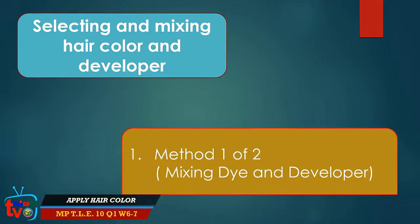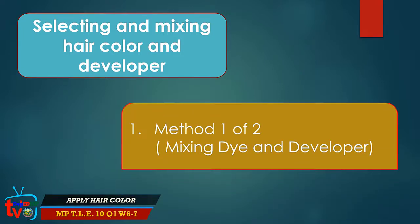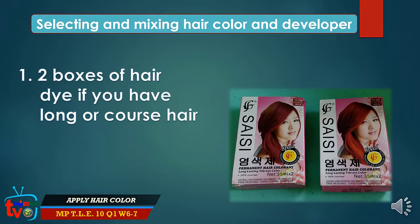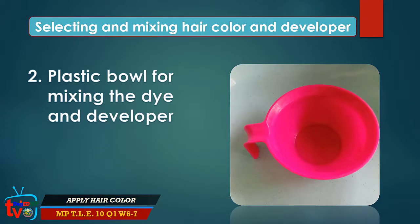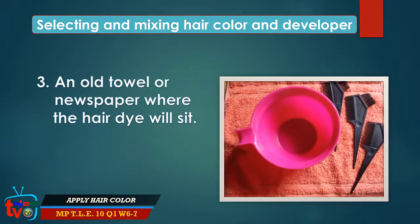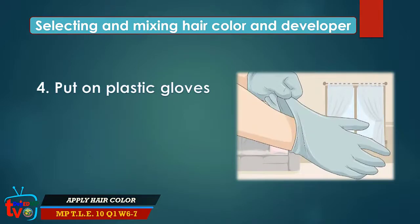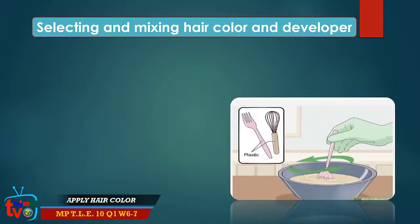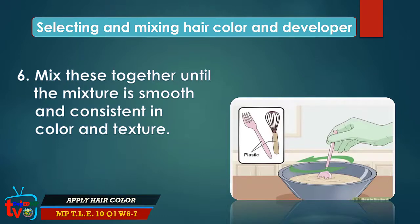Selecting and mixing hair color and developer. Method 1 of 2 — Mixing dye and developer. Step 1: Get 2 boxes of hair dye if you have long or coarse hair. Step 2: Use a plastic bowl for mixing dye and developer. Step 3: Place an old towel or newspaper where the hair dye will sit. Step 4: Put on plastic gloves. Step 5: Combine the hair dye and developer using a 1-to-1 or 1-to-2 ratio. Step 6: Mix together until the mixture is smooth and consistent in color and texture.